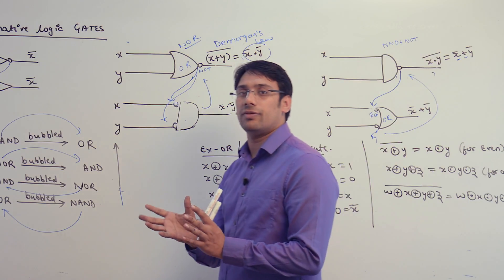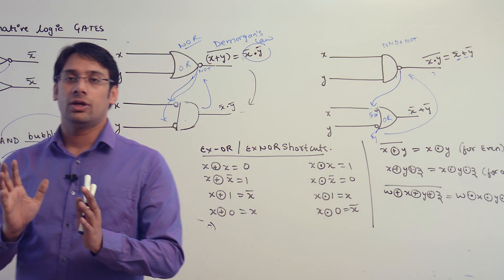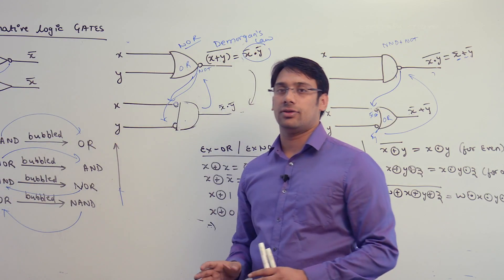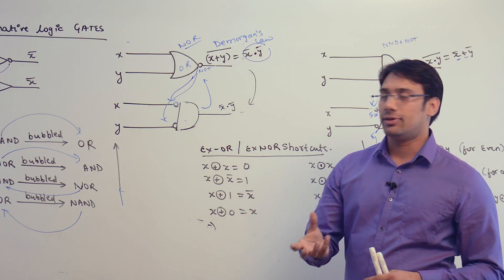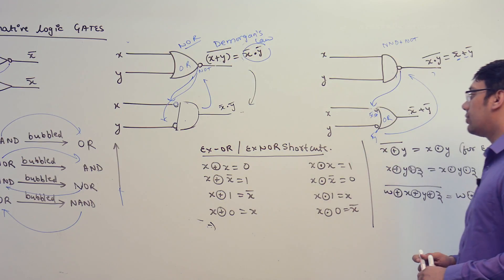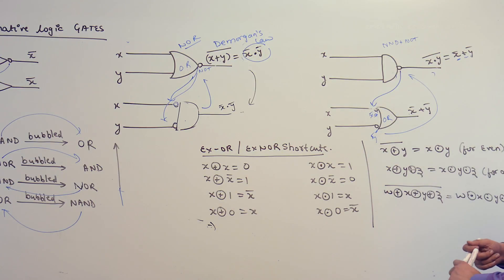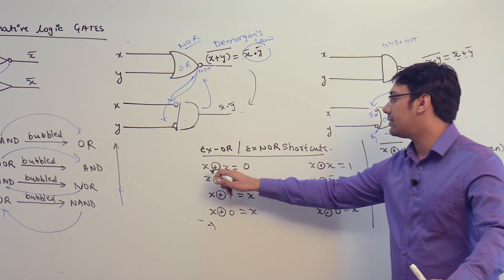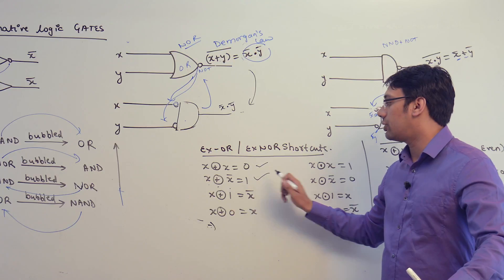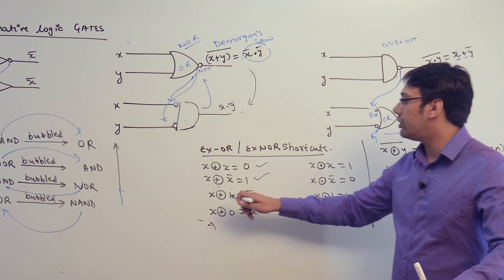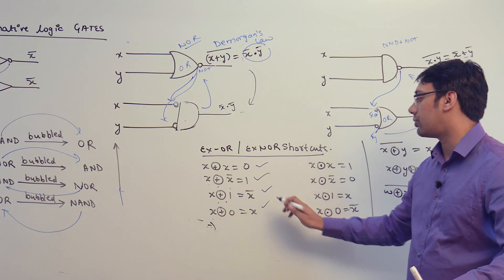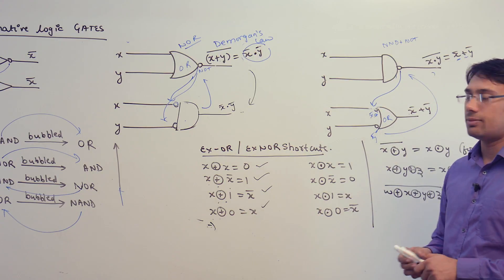We are going to use these gate conversions — for example, if you have a circuit with AND and OR gates and you want to design the same circuit using just NAND gates or just NOR gates, then we are going to use this. Next are XOR and XNOR shortcuts: X XOR X = 0; X XOR X' = 1; X XOR 1 = X'; X XOR 0 = X.